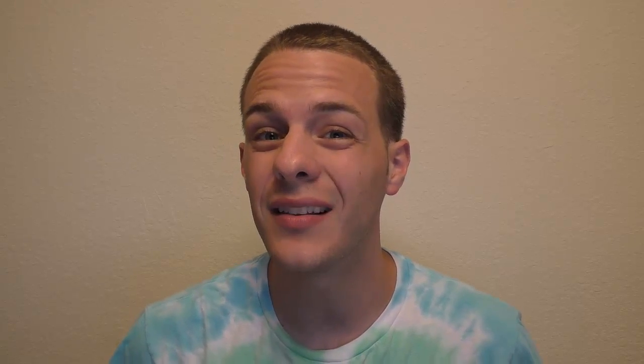Once the 1s orbital is full, the lowest energy orbital available — and thus the next orbital to be filled — is the 2s orbital. Thus the electron configurations of lithium and beryllium are 1s² 2s¹ and 1s² 2s² respectively.